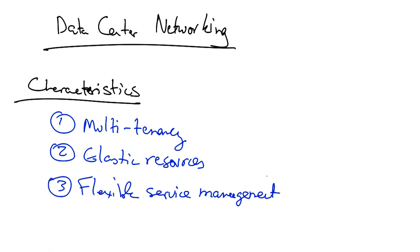One is multi-tenancy. Multi-tenancy allows a data center provider to amortize the cost of shared infrastructure. But because there are multiple independent users, the infrastructure must also provide some level of security and resource isolation.